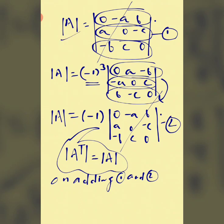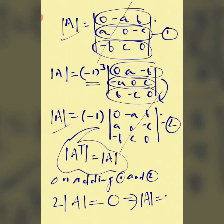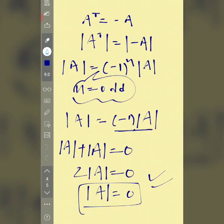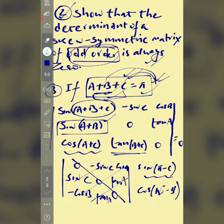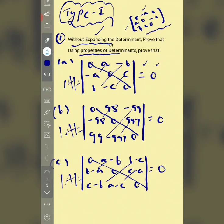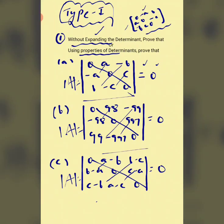Adding the two equations gives 2·det(A) = 0, so det(A) = 0. This is how we solve this type of question. We can solve all such questions using this approach.